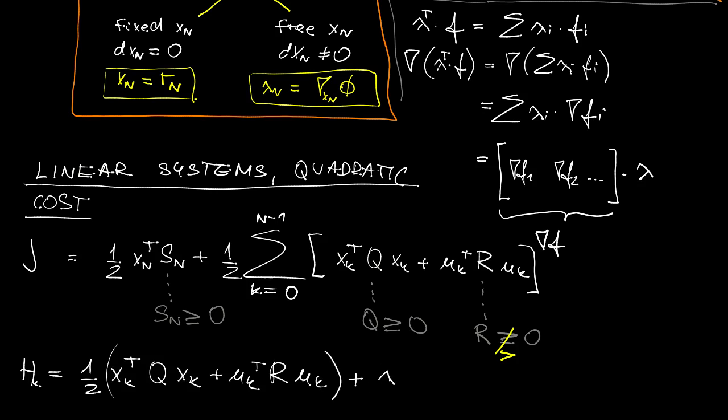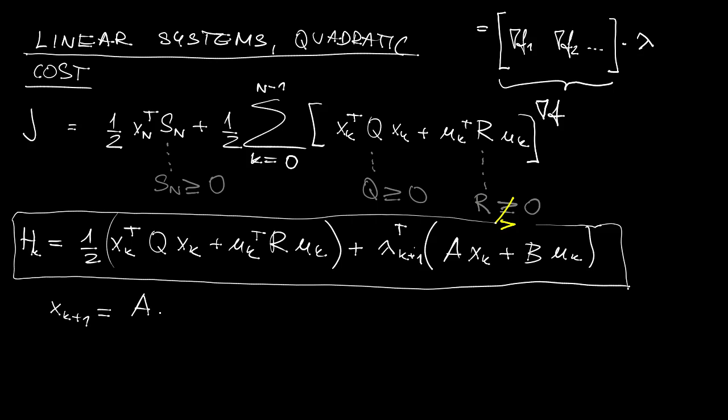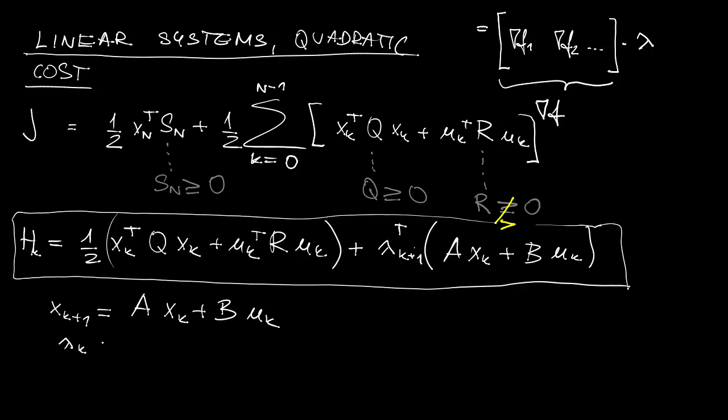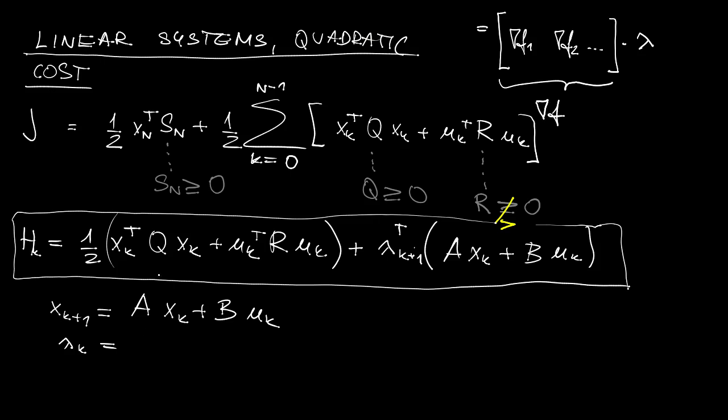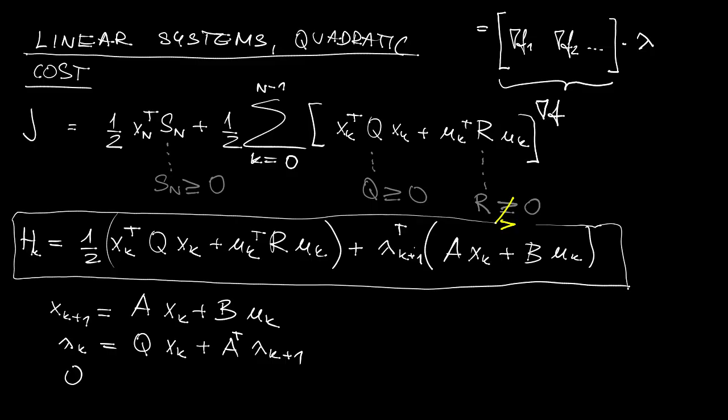Now, this is the Hamiltonian. And writing down the first order necessary conditions of optimality is as easy as finding the gradients of Hamiltonian with respect to all the necessary variables. So, the first equation is actually a state equation, right? There's nothing to compute here. The second equation, so-called costate equation, can be computed as a gradient of H with respect to X. So, the first term here is Q times Xk plus, and now the gradient of this product over here, is lambda transpose times lambda k plus 1. And the third equation, called the stationarity equation, is 0 is equal to gradient of H with respect to U, which goes like this.